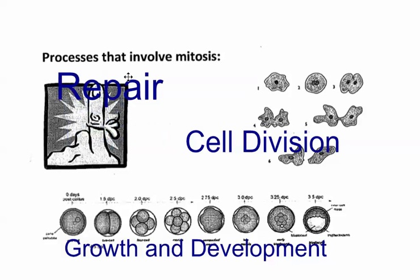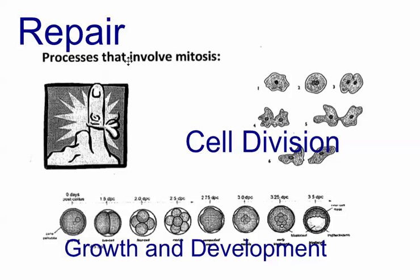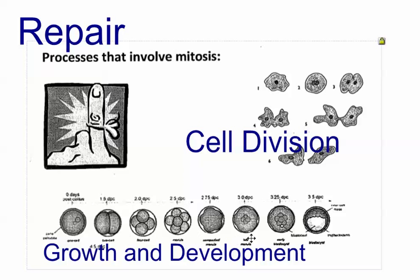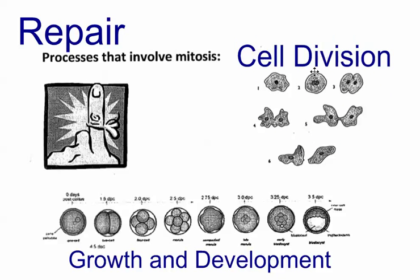Cell division is important for repair — any kinds of cells that need to be replaced — as well as growth and development. You start off as a zygote: one sperm cell and one egg cell fertilize, and it starts to divide repeatedly. The cells eventually begin to specialize and differentiate into their specific jobs. Cell division is also important for general cell replacement, which we'll revisit later.